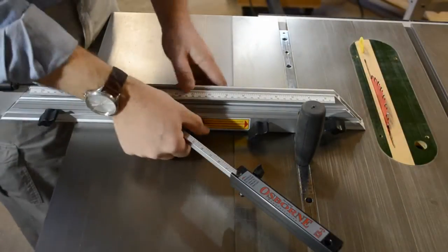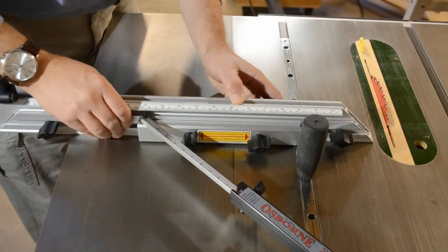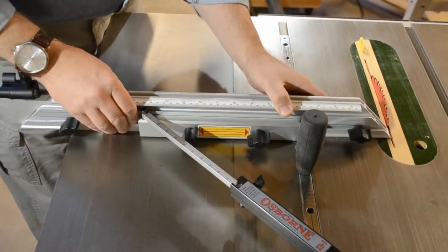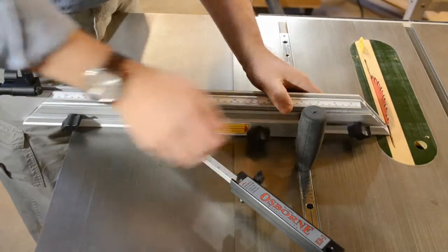After setting an angle, the lateral position of the fence relative to the blade will often need to be reset. Simply loosen the two fence clamp knobs, slide the fence to the desired position, then lock securely.